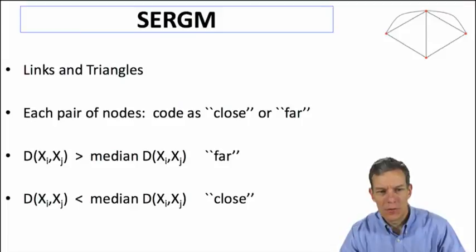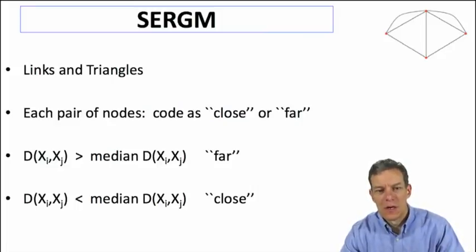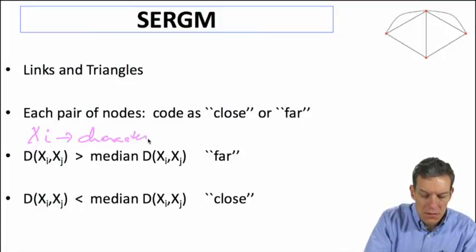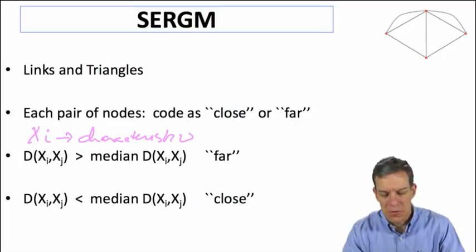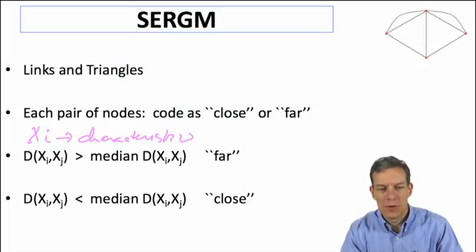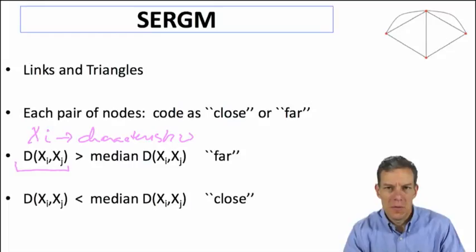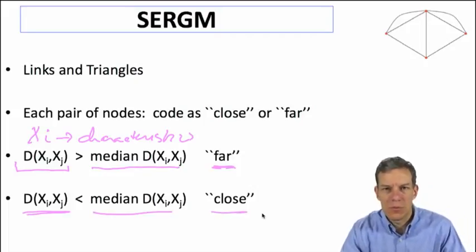We're going to build the model based on links and triangles — two different kinds of subgraphs. For each pair of nodes, we look at their characteristics such as education level, wealth level, caste, and profession. We build a distance function: if the distance between node I and node J is above the median, we call those two nodes far; below the median, we call them close.